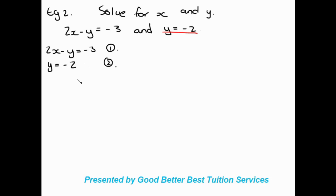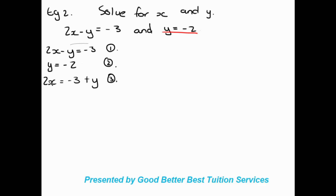To find X, we make X the subject of equation 1. We have 2X over here, so we write 2X equals negative 3, then bring Y over to the right side to get positive Y. We don't necessarily need to get down to 1X because all we need to do from here is substitute in the Y value.